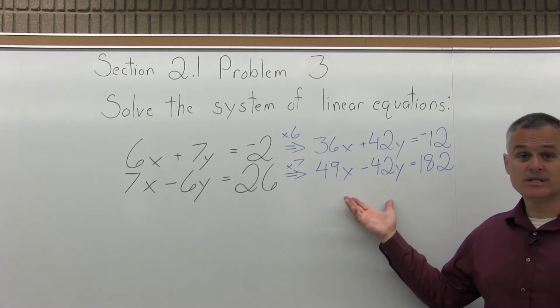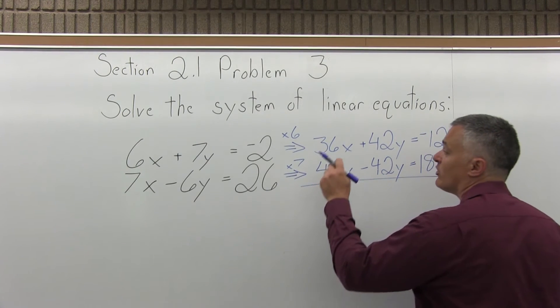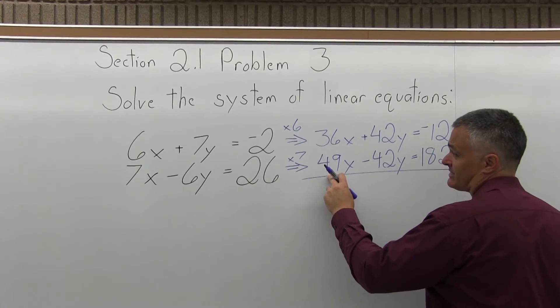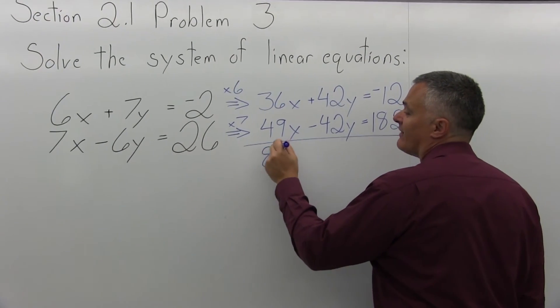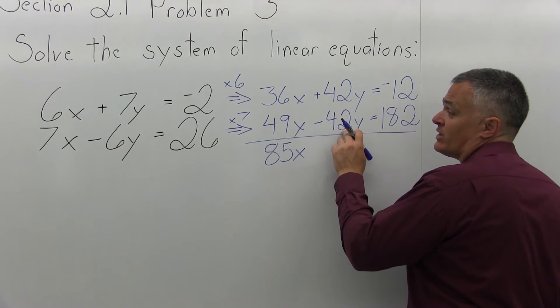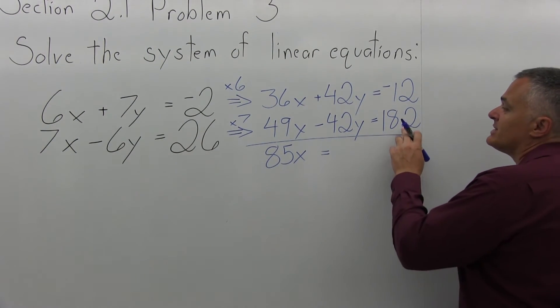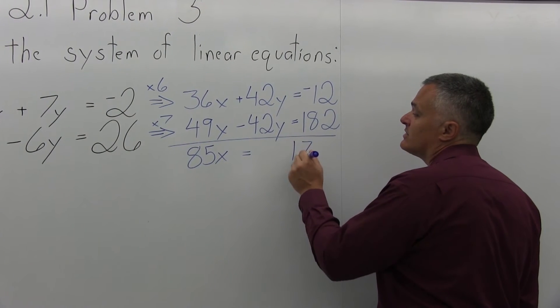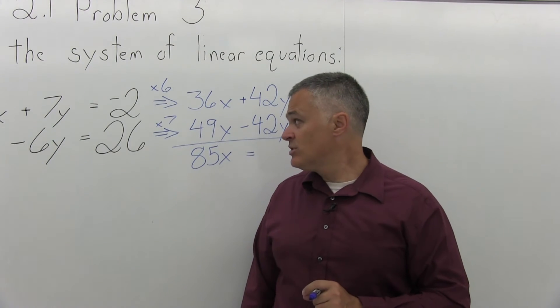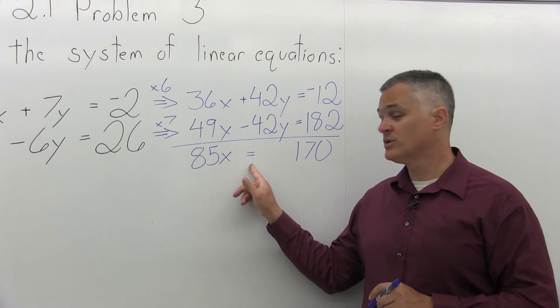Step 2 is add the equations together to cancel one of the variables. Now, 36x plus 49x is going to be 85x. Positive 42y and negative 42y will cancel. And then, negative 12 and positive 182 is positive 170. That's step 2. We're left with 85x equals 170.